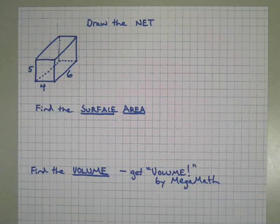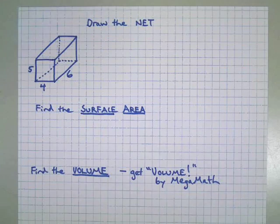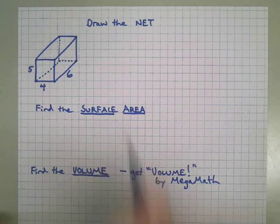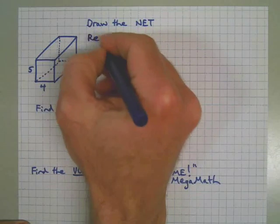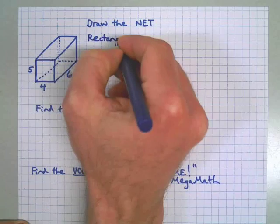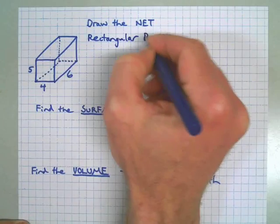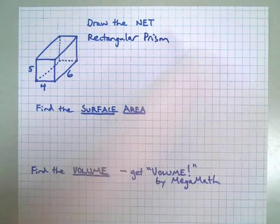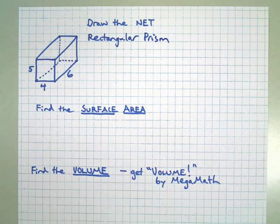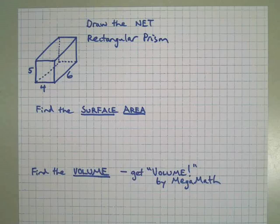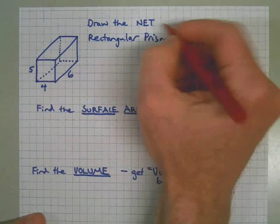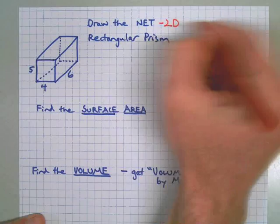It's time to work on finding the surface area and volume of prisms. Here we go. First of all, we have a rectangular prism here and we need to draw the net. A net is a two-dimensional representation of a three-dimensional object, we can just say a 2D drawing of a 3D object.